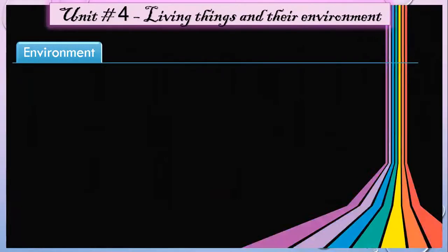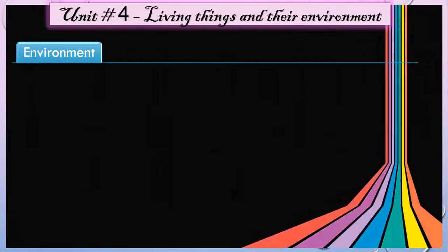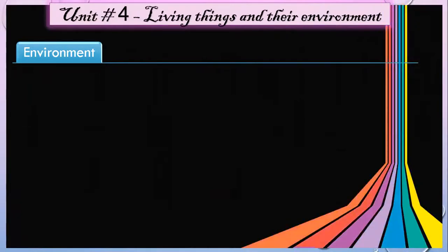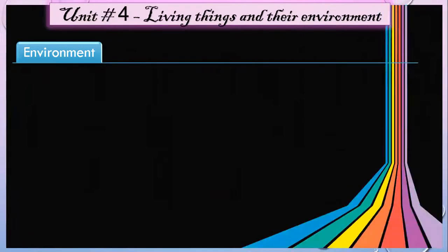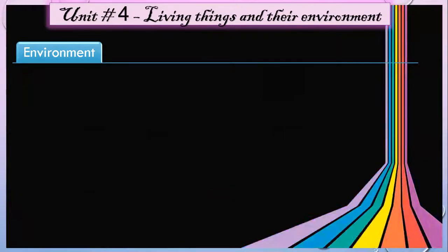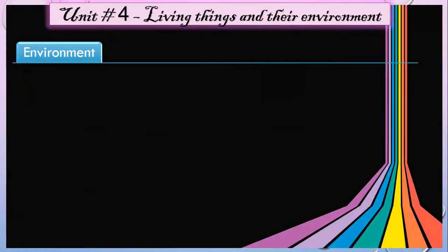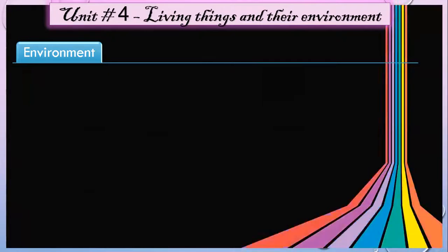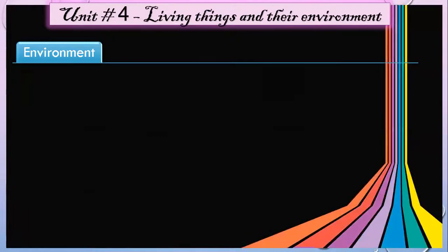Environment — Unit Number Four: Living Things and Their Environment. What is an environment, students? Everything on the earth is either living or non-living.